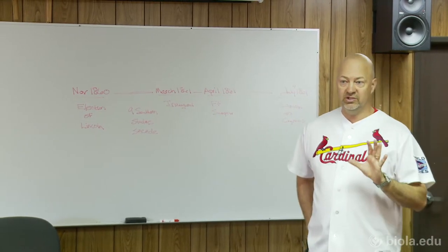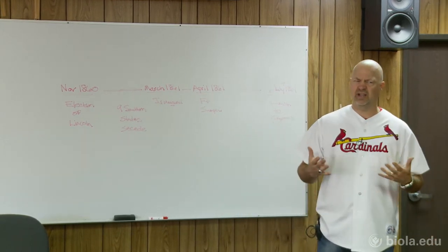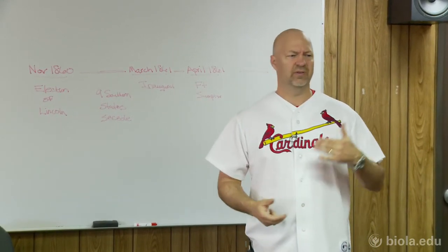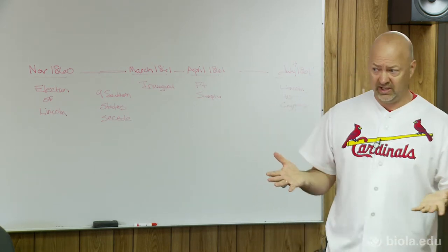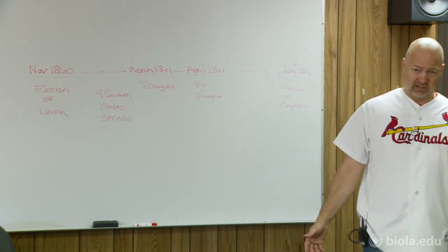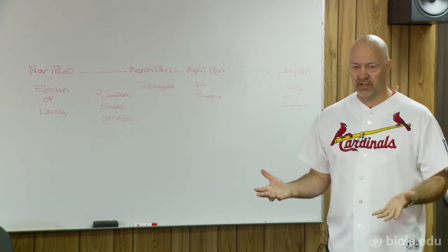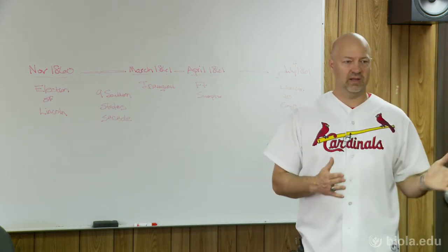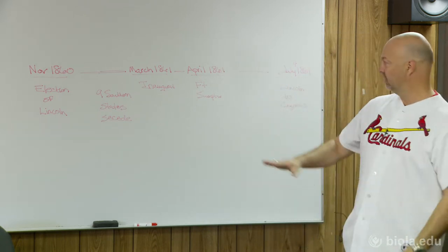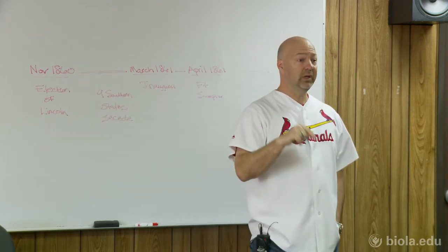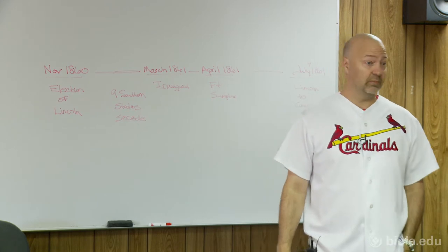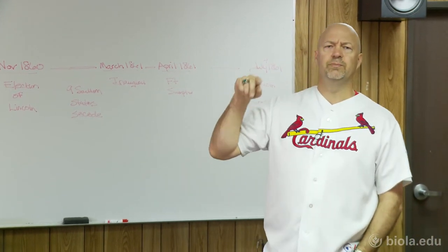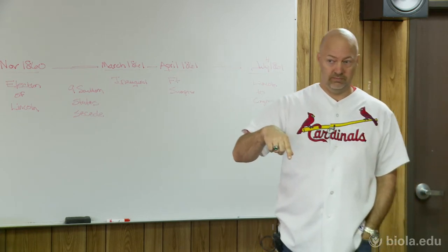Some key dates here just to keep in mind, because you can't understand globally what we're going to be talking about unless you understand a little bit of the timeline. This isn't a US history class — it's not important that you memorize dates for an exam — but as an increasingly educated person you ought to have a general sense of general dates. Like we do today, we elect a president on the first Tuesday of November, written into the Constitution, every four years. So in November 1860, Abraham Lincoln was elected.